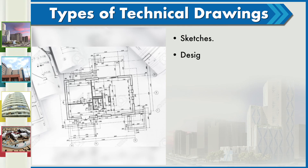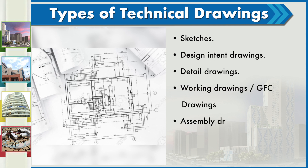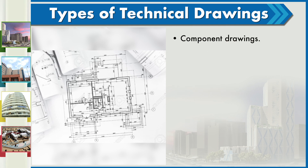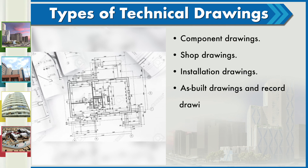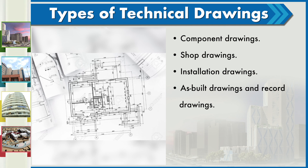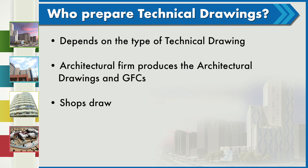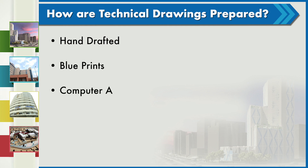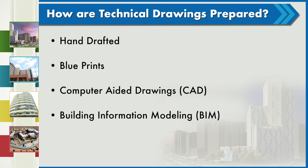There are various types of technical drawings: sketches, design intent drawings, detail drawings, working drawings, good-for-construction drawings, assembly drawings, component drawings, shop drawings, installation drawings, as-built drawings, and record drawings. Who prepares these technical drawings depends on the type. An architectural firm produces the architectural drawings and good-for-construction drawings. Shop drawings are prepared by vendors, and each consultant prepares their respective set of drawings.